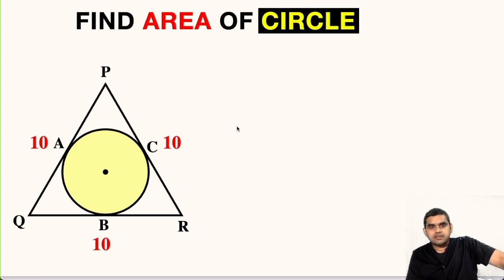So welcome to my YouTube channel. Today I am back with another interesting question. In this figure we have an equilateral triangle. Each side is given as 10 units and inside it we have a circle. In fact it is an incircle and we have to find the area of this circle.